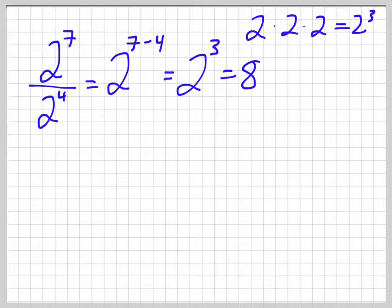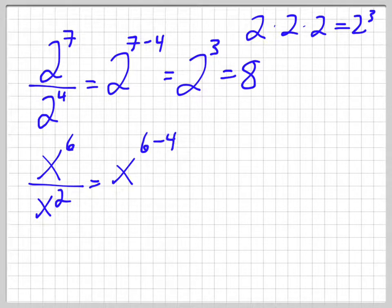So why don't we do something with variables. So let's try x to the 6 divided by x to the 2. So that's the same as x to the 6 subtract 4 and that's x to the 2. No, sorry. My apologies. See my mistake already. x to the 2 and that's x to the 4. I got ahead of myself. So I put my 2 up here. There we go. That's better.